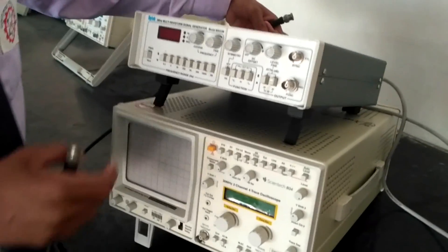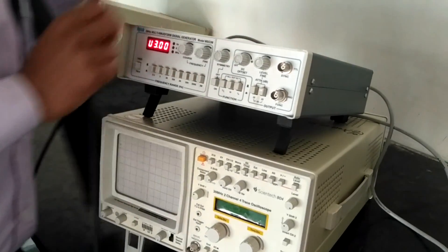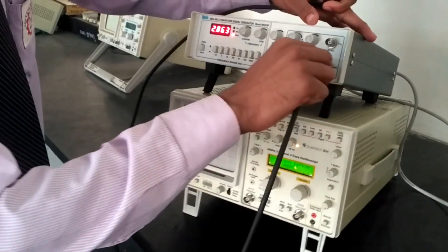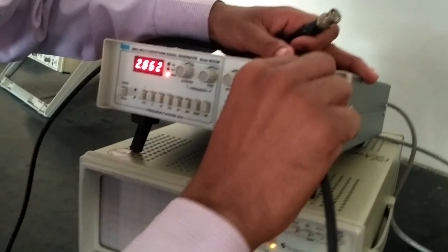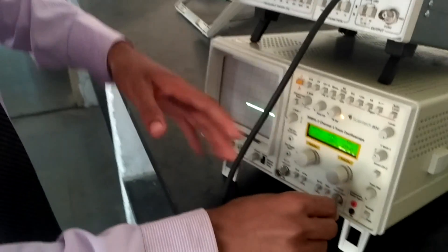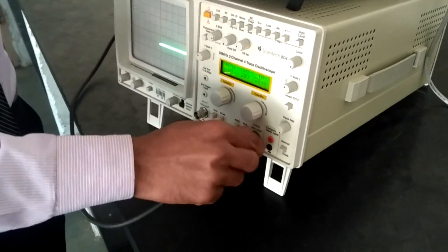First of all, we have to switch on the function generator as well as the CRO. We have switched it on and switched it on again to connect the function generator to CRO using the CRO probe.